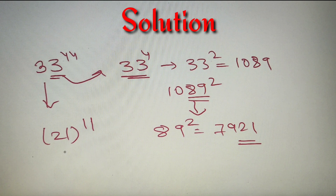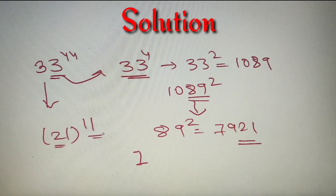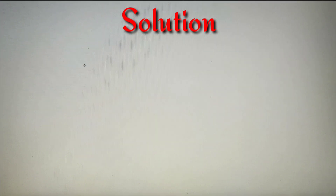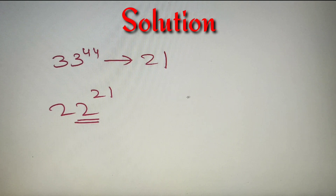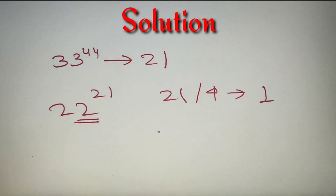When finding the last two digits of a number ending in 1, the unit digit is always 1 and the tens digit is the tens digit of the base multiplied by the unit digit of the power. So we get 21 as the last two digits of 33 raised to the power 44. Therefore, we have to find the unit digit of 22 raised to the power 21. Since the cyclicity of 2 is 4, we divide the power by 4 and get a remainder of 1.